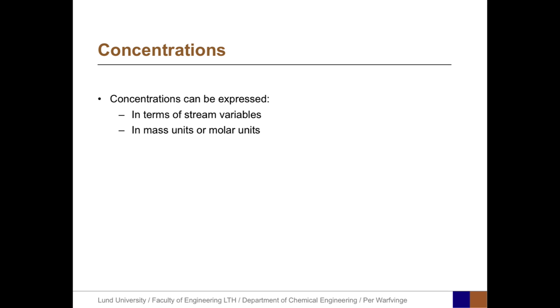Concentrations can be expressed in terms of stream variables and in mass units or in molar units. For example, if we have two substances A and B in stream 1, the mass fraction is F1A equals the ratio between the mass flux of A in 1 divided by the two mass fluxes of A and B. The molar fraction of A is X1A equals the ratio of the molar flux of A divided by the sum of the molar fluxes in the stream, that is, the molar fluxes of A and B.